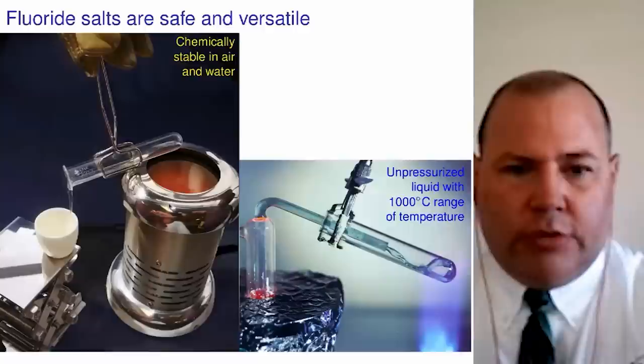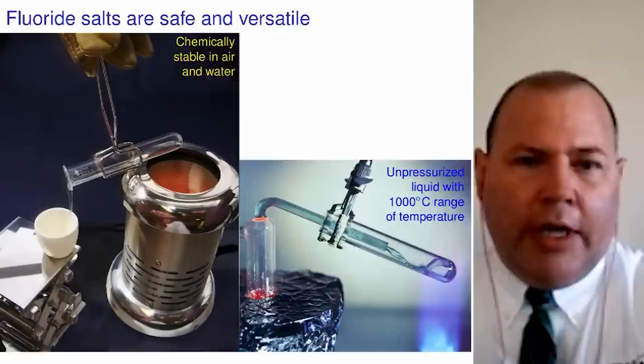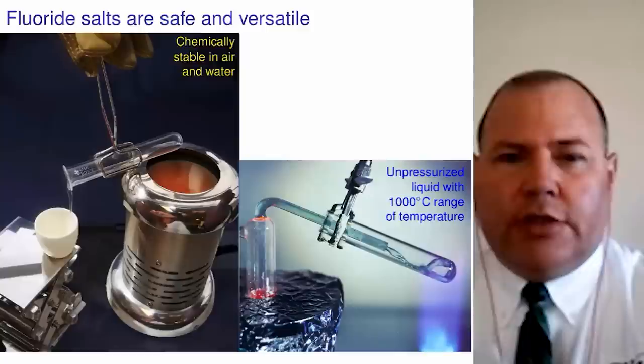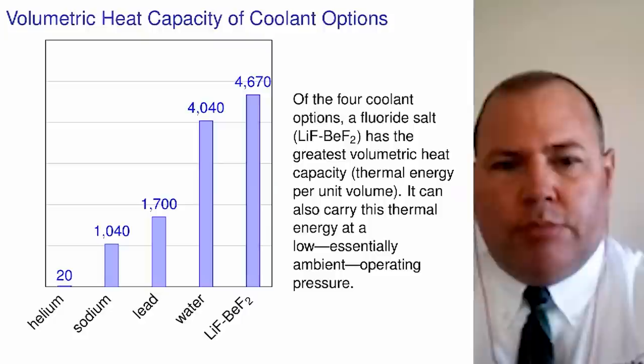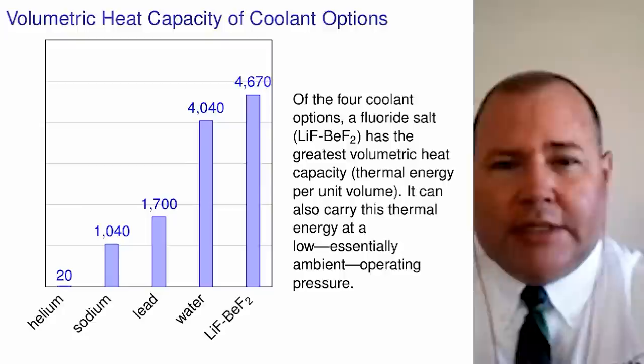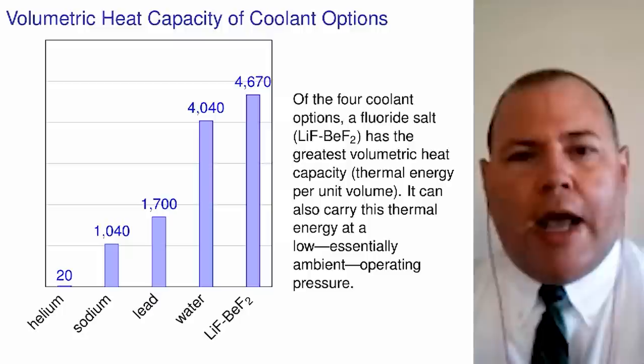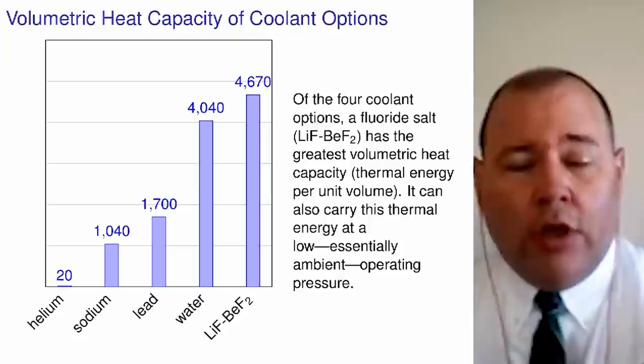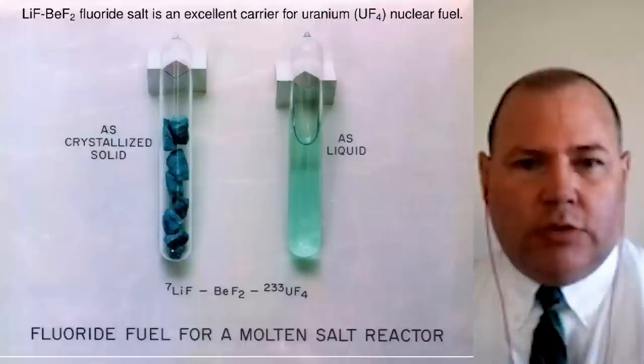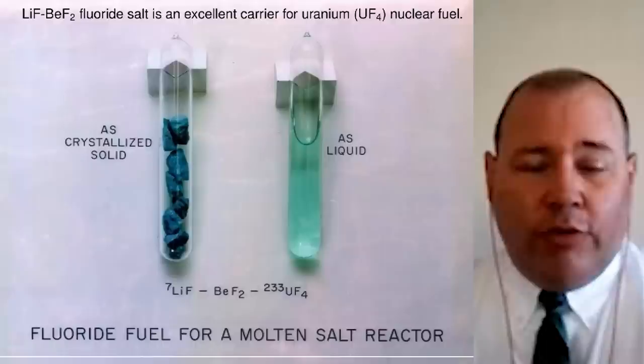These molten salts are very chemically stable in air and water — we like that a great deal. We like their large liquid range. It's not the salts that give us a problem; it's the other materials and the corrosion that takes place. FLiBe — lithium fluoride beryllium fluoride — has an exceptionally high volumetric heat capacity, even surpassing that of water. That volumetric heat capacity is really your fundamental yardstick of how big your reactor is going to be and how you move thermal energy out from where it's generated in the core to the power conversion system. FLiBe just keeps showing up over and over again as a real winner.